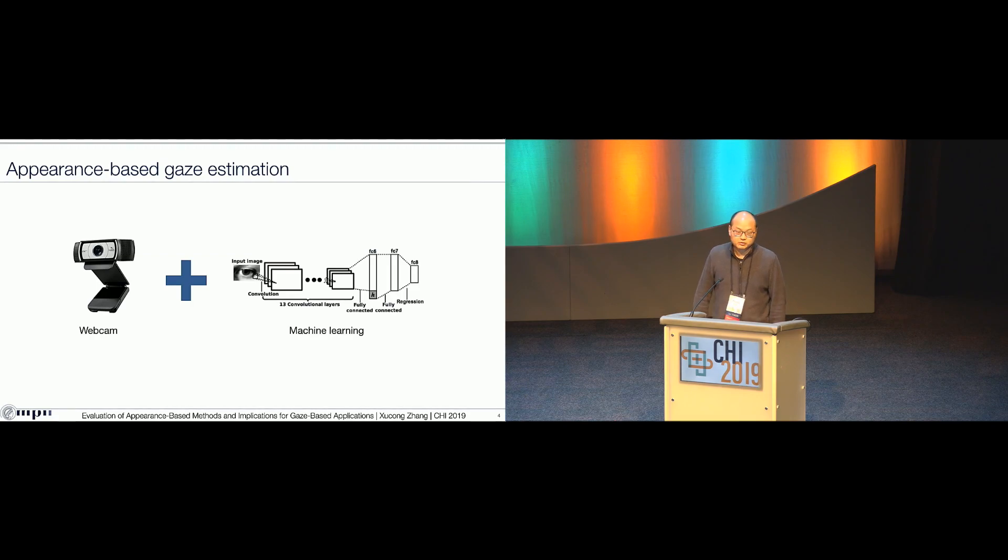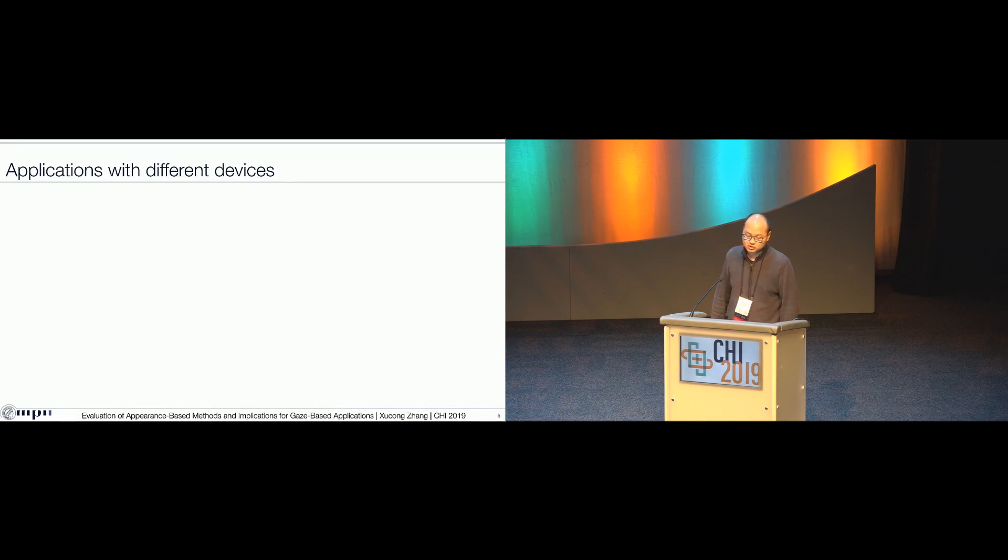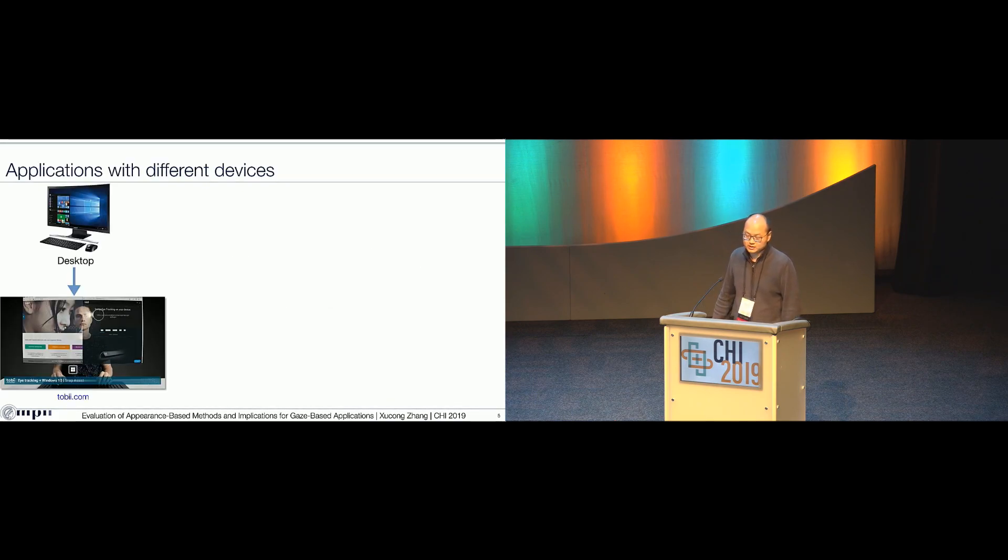If you read some papers from the computer vision community, you will find another hot research topic called appearance-based gaze estimation. This group of methods can accept input from a single webcam and process the data with machine learning techniques and at last output the 3D gaze direction. Because this group of methods can work with a single webcam, it can work not only in desktop settings to estimate human eye gaze, but it can also work with longer distances.